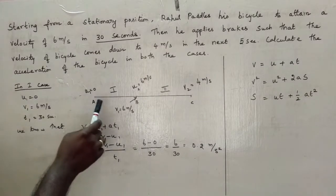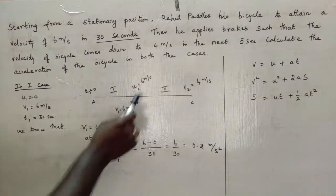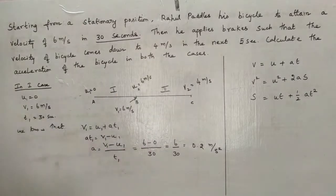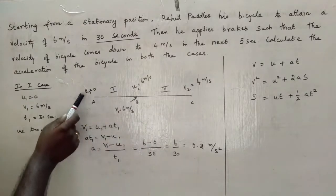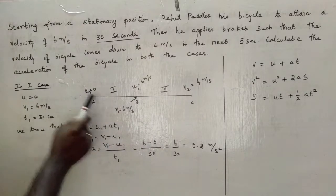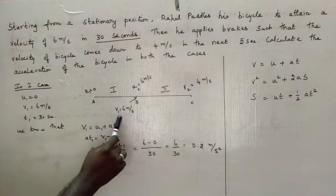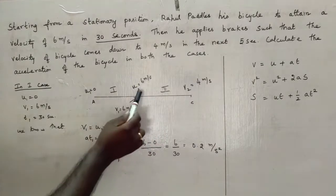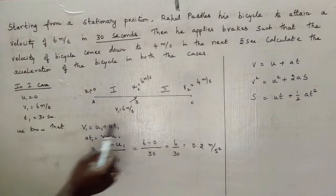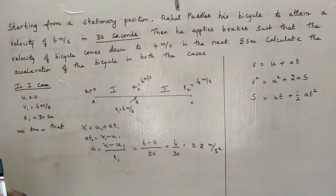Now this problem can be split into two halves: first half and second half. In the first half, the initial velocity can be taken as U1 and the final velocity as V1. In the second half, the initial velocity can be taken as U2 and the final velocity as V2.